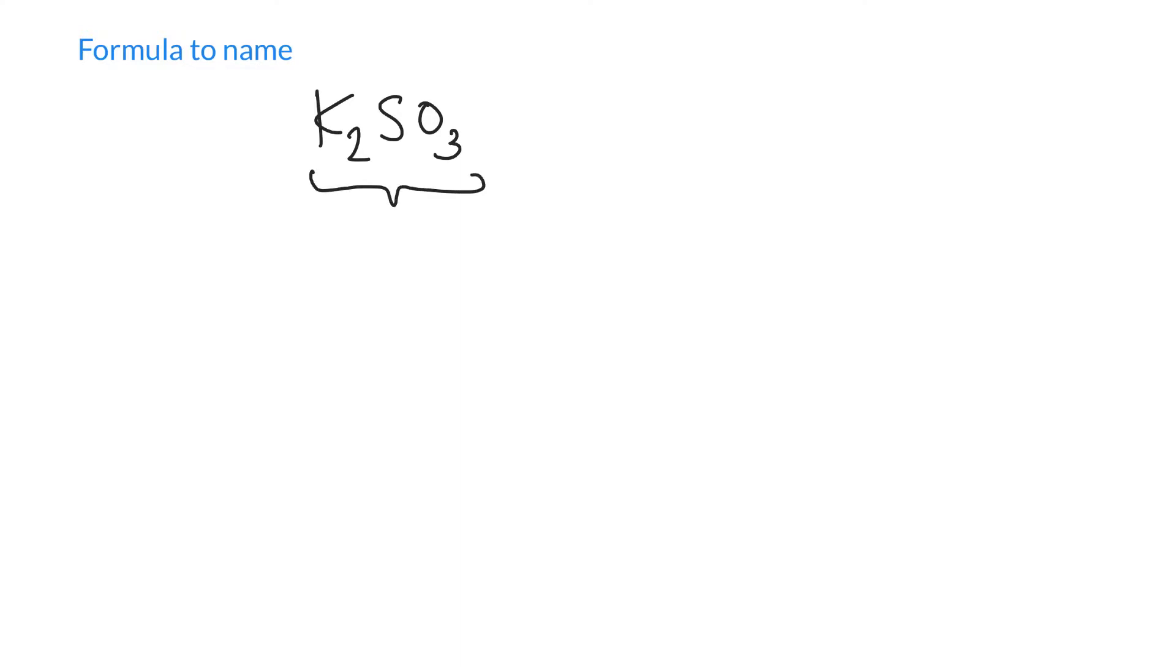We would have to take that and pick it apart. We'd have to look at the K and recognize that the K2 means there's two potassiums, and we know the charge on potassium is one plus because it's in group one, and the SO3 we'd have to recognize as a polyatomic ion with a charge of two minus. Now we can also see the golden rule - these two minuses cancel out the two one pluses, so we are golden.